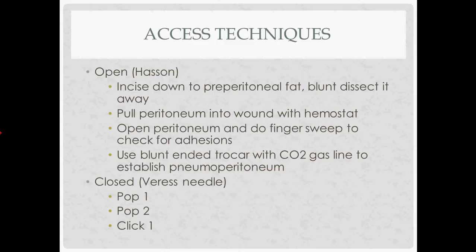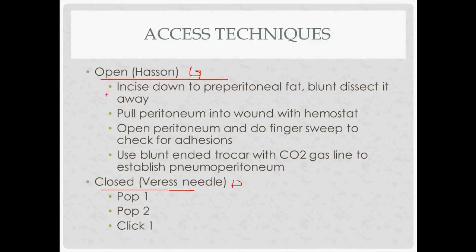There are two types of ways to gain access to the peritoneum for laparoscopic surgery and inflating the abdomen. The open technique, favored by general surgeons, uses direct visualization: you incise down to the preperitoneal fat, get that out of the way, pull the peritoneum into the wound with a hemostat, open it up, sweep your finger around to check for adhesions, then put the trocar in and create the pneumoperitoneum by inflating the abdomen with CO2 gas.